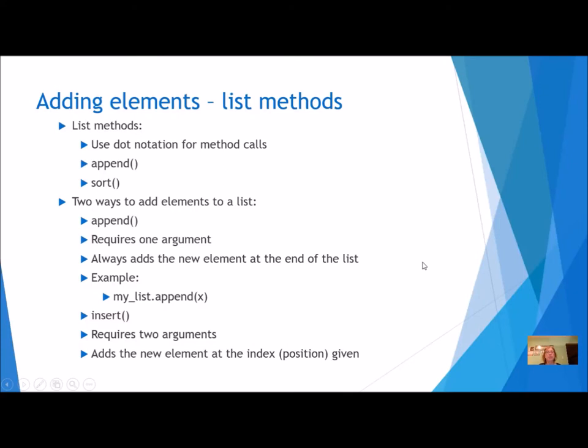Let's talk about adding elements to our list. Now we already have been using some list methods. Remember, methods use the dot notation, and the two that we've been using so far are append and sort. So if I want to use these, I have my list first, dot, my method, and I have to have parentheses. There are two ways to add elements to your list.